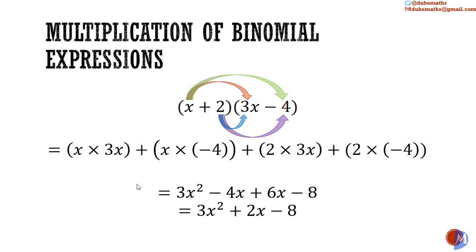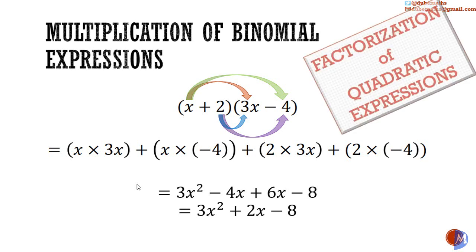So we end up with 3x squared plus 2x minus 8. Starting with an expression in the form 3x squared plus 2x minus 8 and getting to the factors x plus 2 and 3x minus 4 is the second form of factorization we'll do: factorization of quadratic expressions. More on this in a separate video.